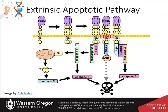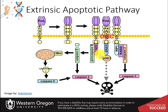The extrinsic apoptotic pathway is initiated by external ligands that bind with protein death receptors on the surface of the cell, such as FAS and tumor necrosis factor receptor. Once the receptor is bound, FAS oligomerizes to form the death-inducing signaling complex (DISC). Formation of the DISC complex leads to the cleavage and activation of procaspase-2 and procaspase-8. Activated caspase-2 and caspase-8 can mobilize effector caspases directly and can also activate the mitochondrial apoptotic cascade as well.